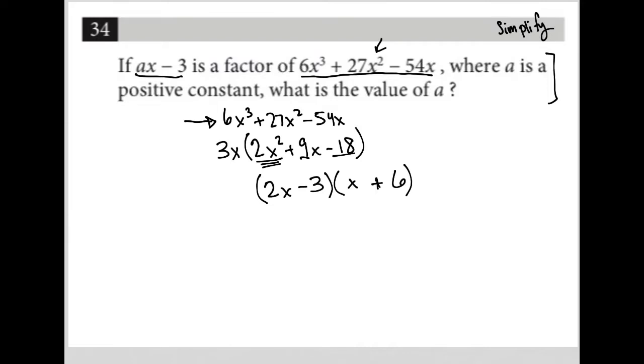Let me just test to make sure this is all good. So 2x times x, that's 2x squared. 2x times 6, that's 12x minus 3x, that makes it 9x. 12x minus 3x is 9x, perfect. And negative 3 times positive 6 is negative 18.